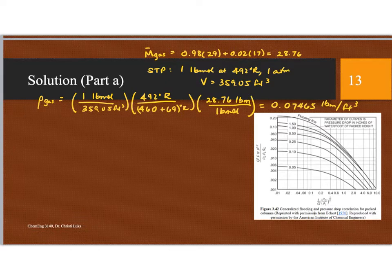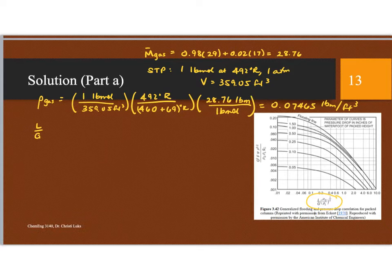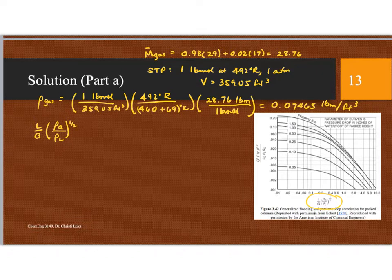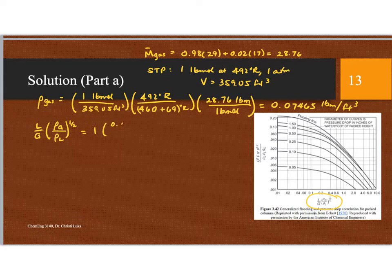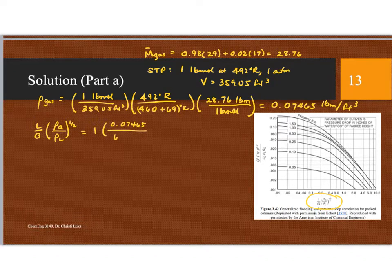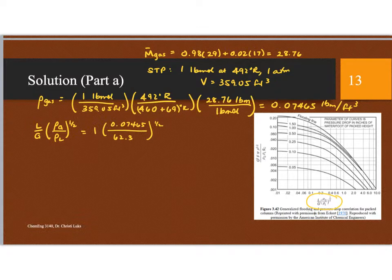Now for this, I need this parameter down here. So I need L over G, the density of the gas over the density of the liquid to the 1 half power. L over G was described in the problem statement as 1. I've just calculated the density of the gas. And in the same units, the density of the liquid was given. So this is unit free, 0.0346.